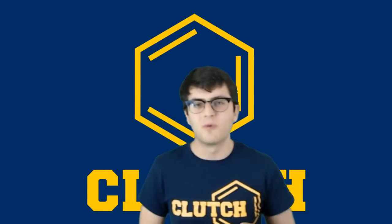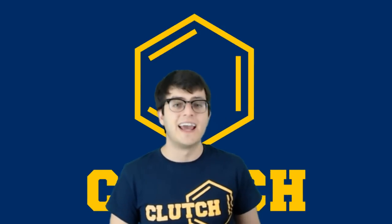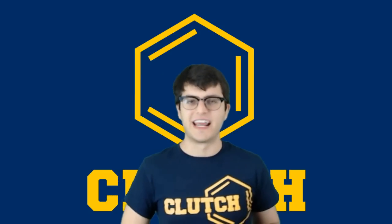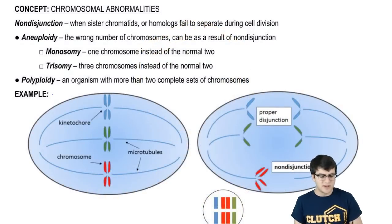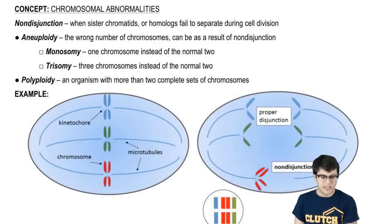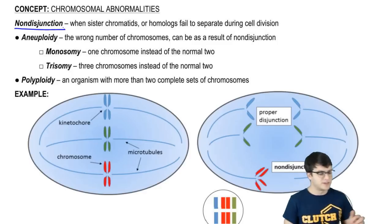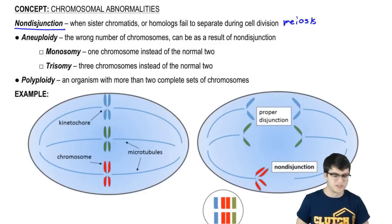In this video we're going to talk about chromosomal abnormalities and non-Mendelian patterns of inheritance. We've already mentioned one type of abnormality that can occur, and that is non-disjunction, when sister chromatids or homologs fail to separate during cell division, specifically during meiosis.